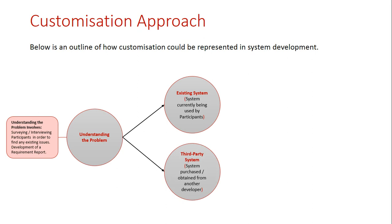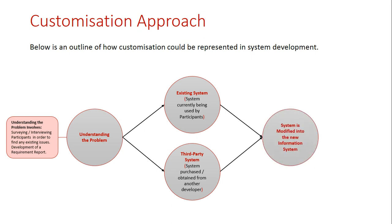The other area they could look at is third-party systems — systems other developers have created. They can purchase one of those off the market or find an open-source information system and modify that to meet the requirements of the organization they're developing the information system for.